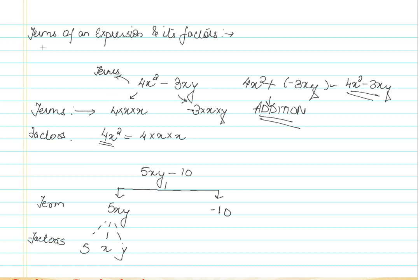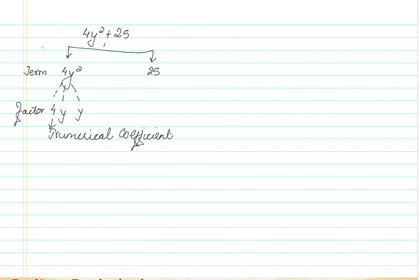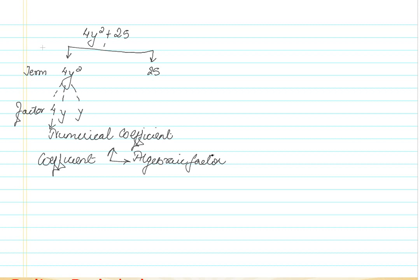In a generic term, the coefficient can be a numerical factor, an algebraic factor, or a product of two or more factors. So we talked about a numerical coefficient, but in a generic term, a coefficient can be a numerical coefficient, it can be an algebraic factor, or it can be a product of two or more factors.